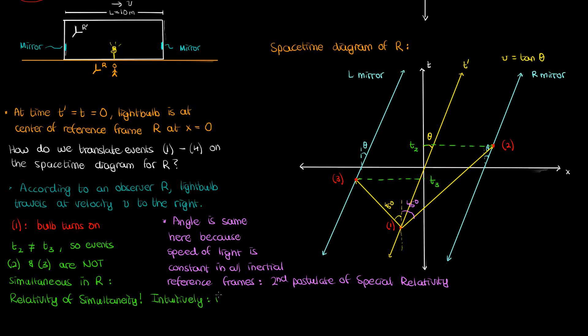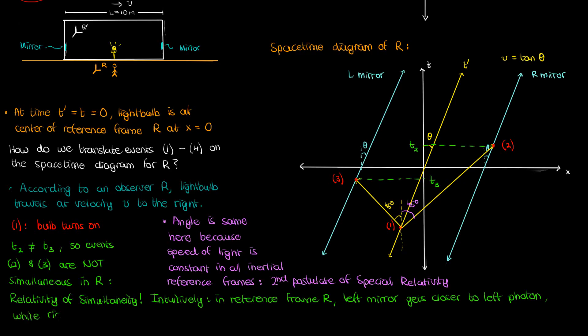Why does this happen intuitively? The photon on the left is trying to hit the left mirror, but as time goes on the left mirror gets closer to the left photon by virtue of the train's motion — so according to someone in r, the left photon hits its mirror first. Meanwhile the right mirror moves further away from the right photon as time goes on, causing the right photon to reach the right mirror later. That's why event 2 ends up occurring after event 3 according to an observer in r.